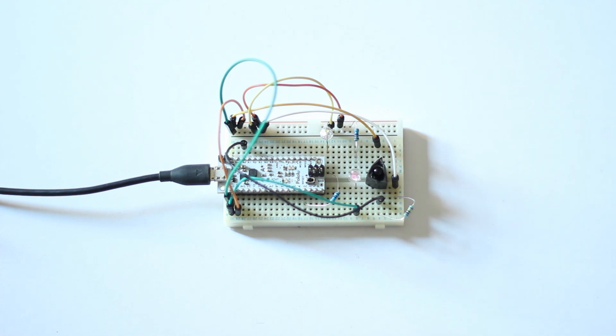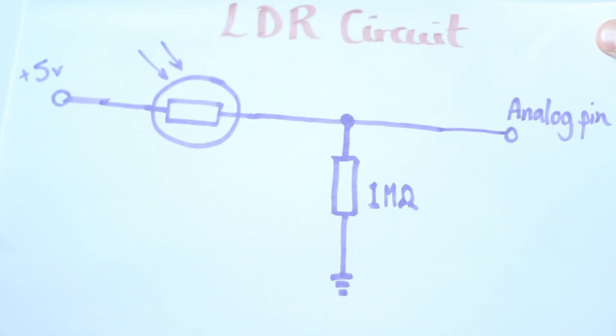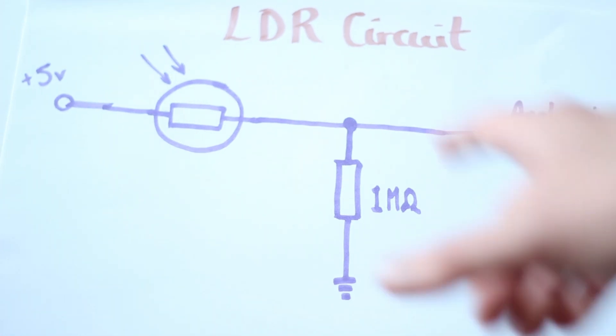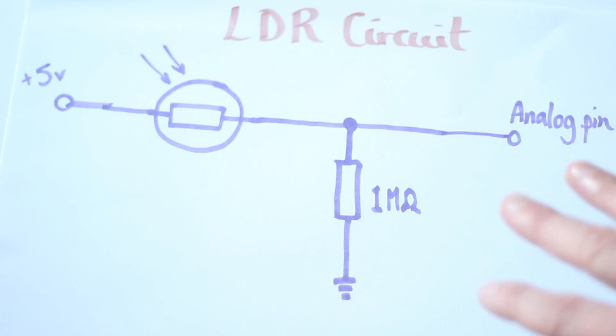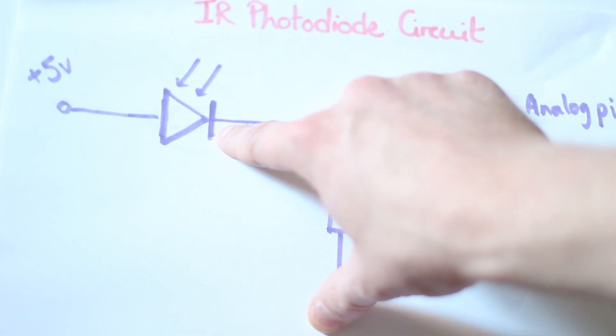So let's have a look at how the circuit looks. Here's probably one you're all very familiar with. This is an LDR circuit, so it's just a light dependent resistor works on visible light and we're using it as a voltage divider. Now the infrared photodiode is very similar except it's a diode here.